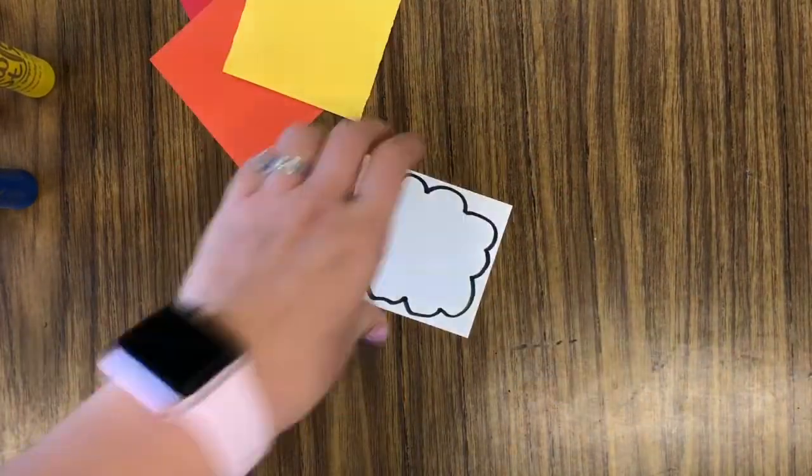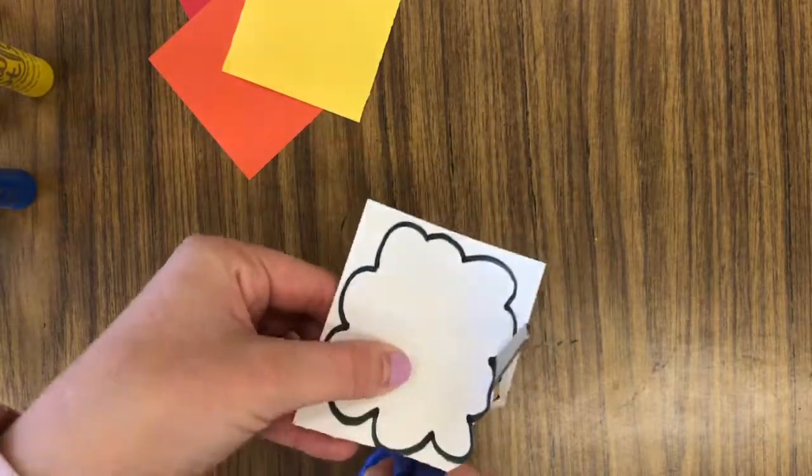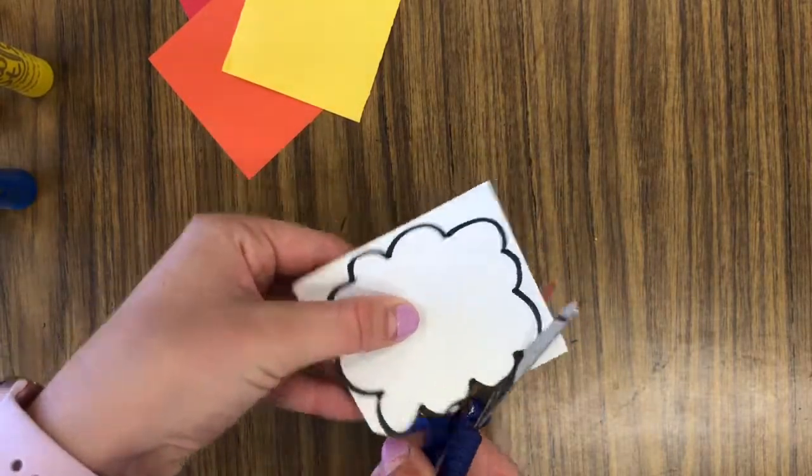When your painting is dry we will start the collage. A collage is when we cut different pieces of paper and glue them together to create a picture.